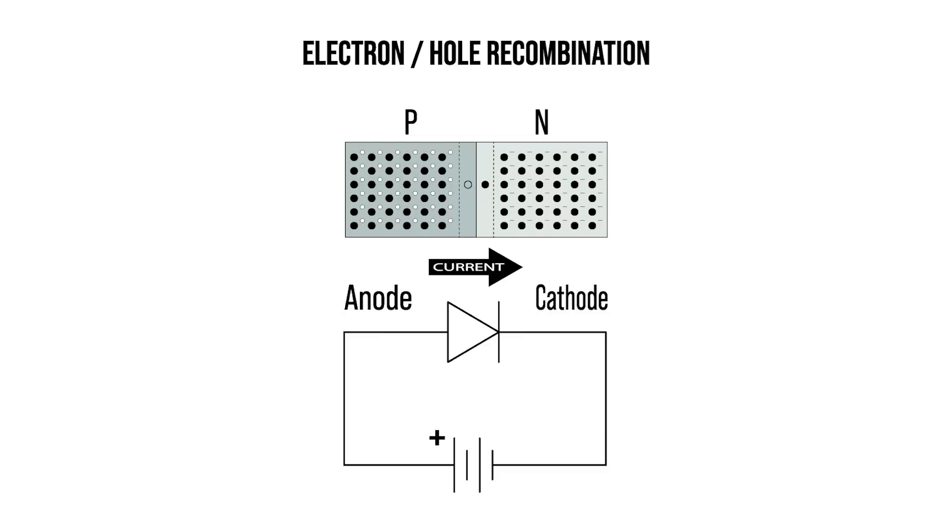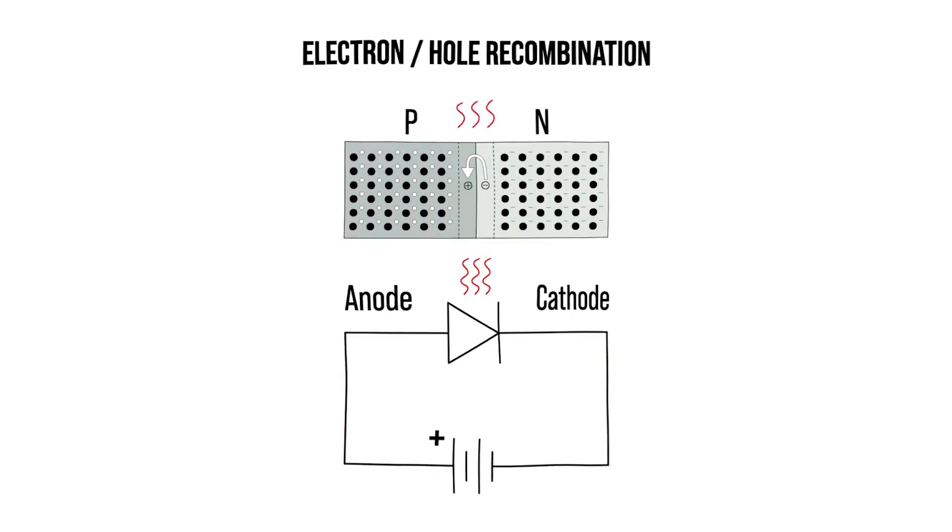If we apply enough potential voltage across this device, overcoming the barrier potential, free electrons from the n-type material will cross over the depletion region and recombine with holes in the p-type material. When this occurs, some energy is dissipated as heat.